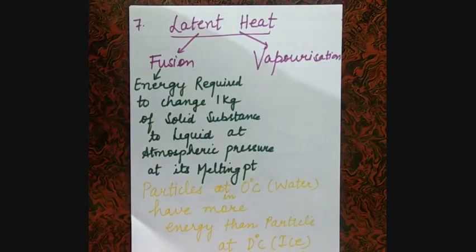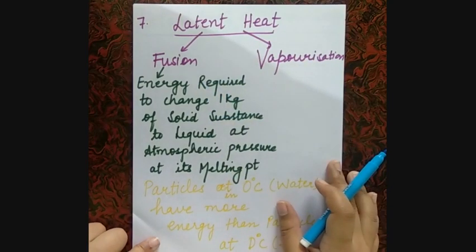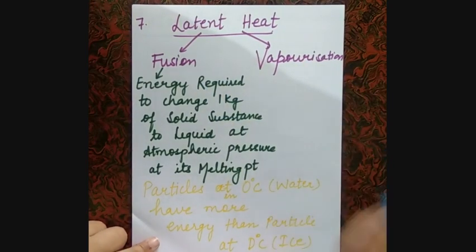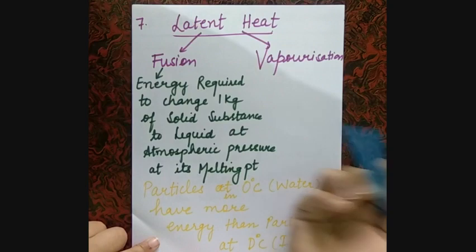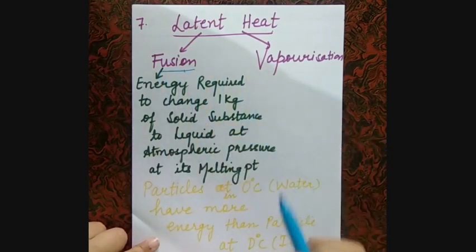If we talk about latent heat, we have two types: latent heat of fusion and latent heat of vaporization. So let's get some idea about fusion and vaporization — what happens in fusion.